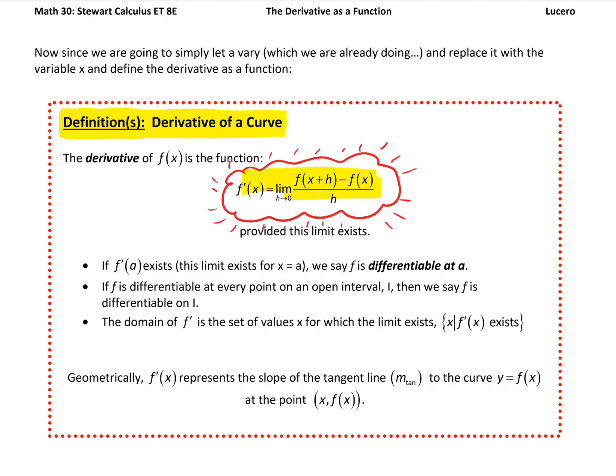This is a big deal. F prime of x is defined as this limit, provided this limit exists. In this section, we're going to get into when this limit will not exist. The derivative equals this limit if the limit exists.